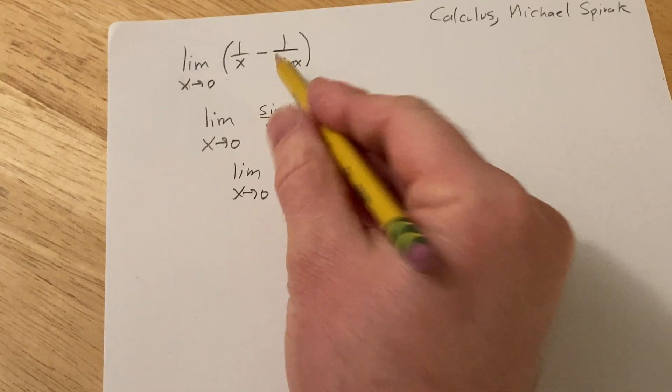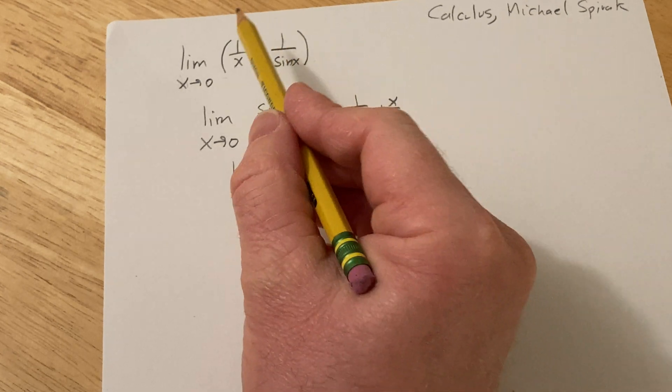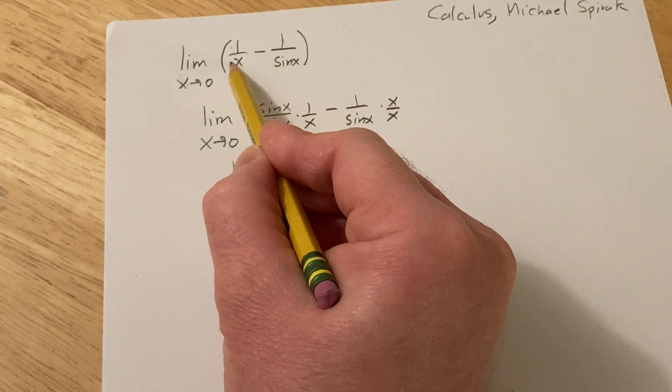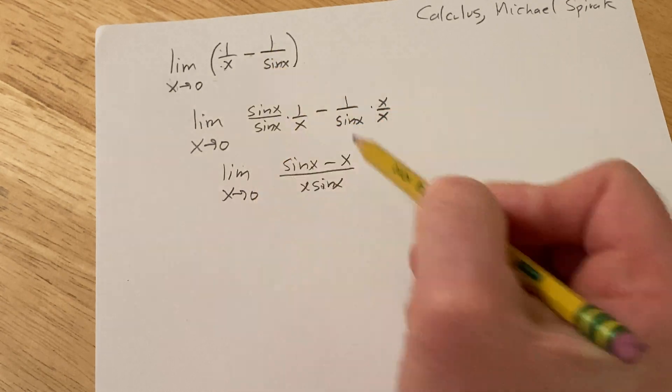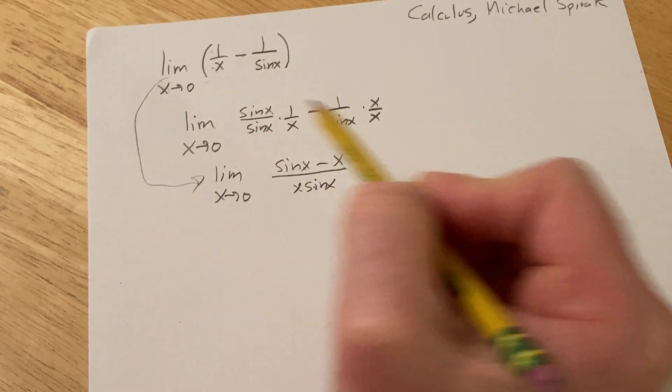So how do I actually do it? I just go from here to here. I just say it's 1 times what's missing here to get the LCD sin x minus 1 times what's missing here to get the LCD x, so you can go from here to here. That's typically how I do it.